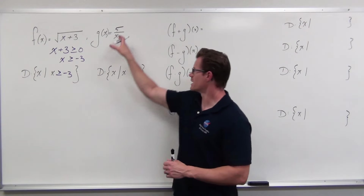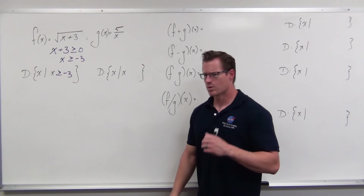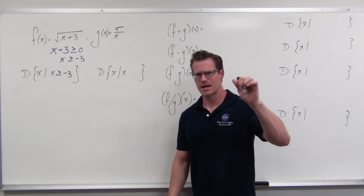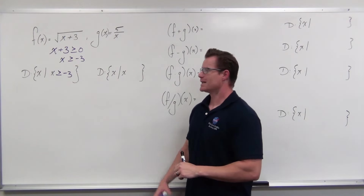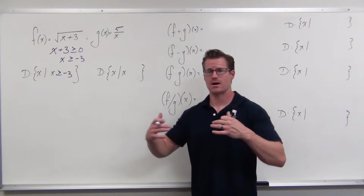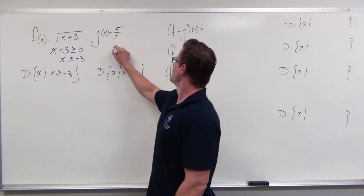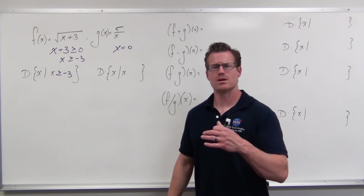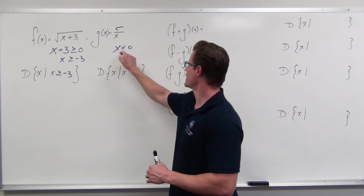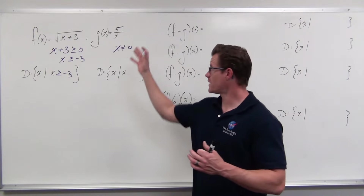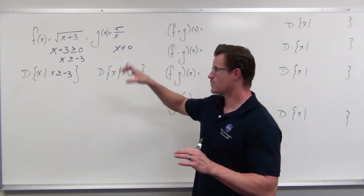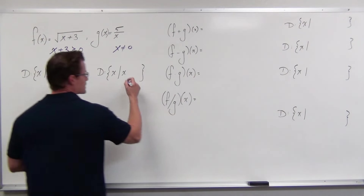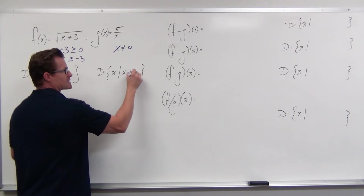Then we go to the g(x) function with a denominator. In order for inputs to give me a real number defined value, it's about defined values for fractions. If x equals zero, the denominator equals zero — that's an undefined value, and that's a problem. Any positive or negative value is fine, but we cannot allow zero as an input. So x cannot equal zero.